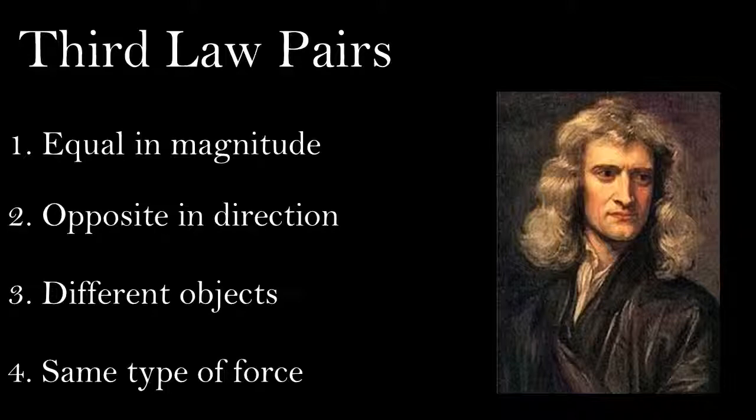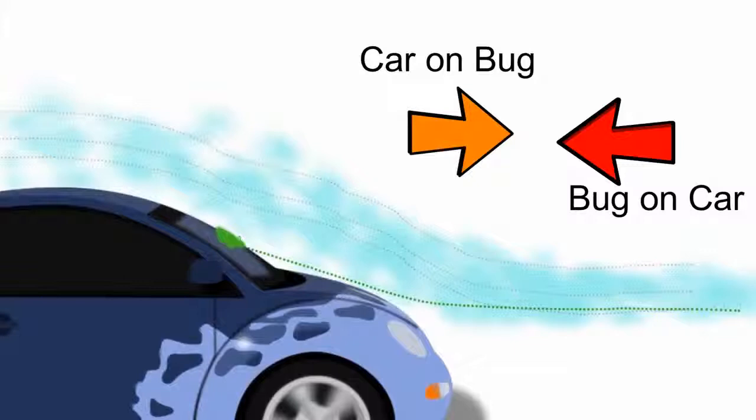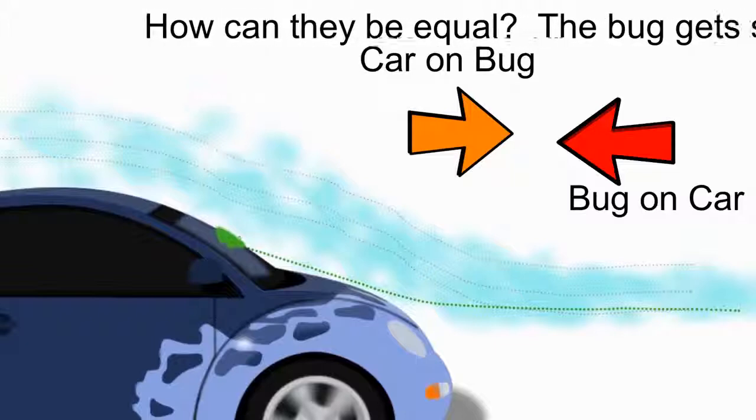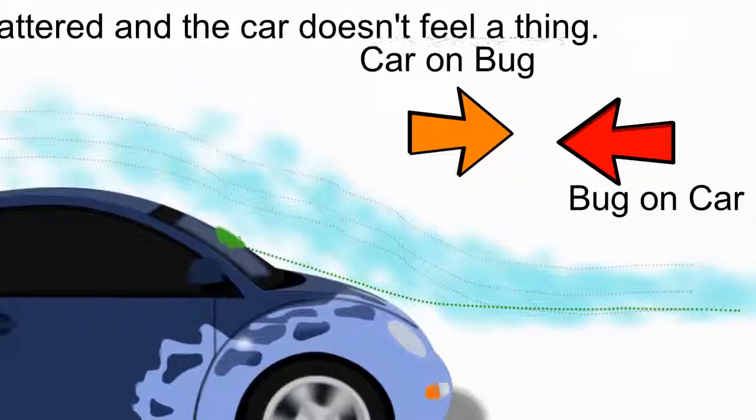Sometimes when I tell people that the forces in our problem are third law pairs, they get upset and they tell me, well, you just said that the forces have to be equal in magnitude. Well, how can they be equal if the bug gets splattered while the car doesn't feel a thing?